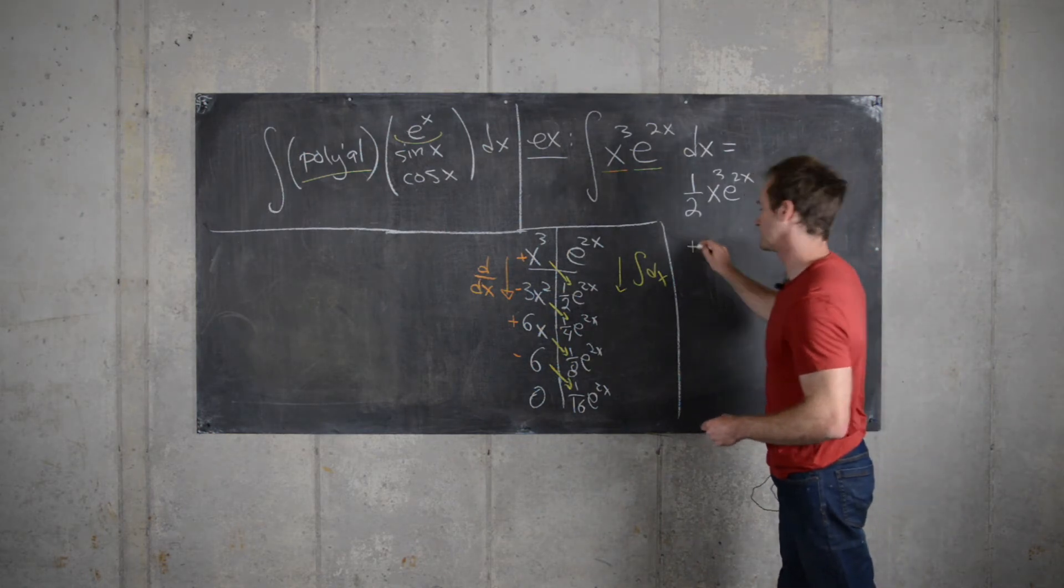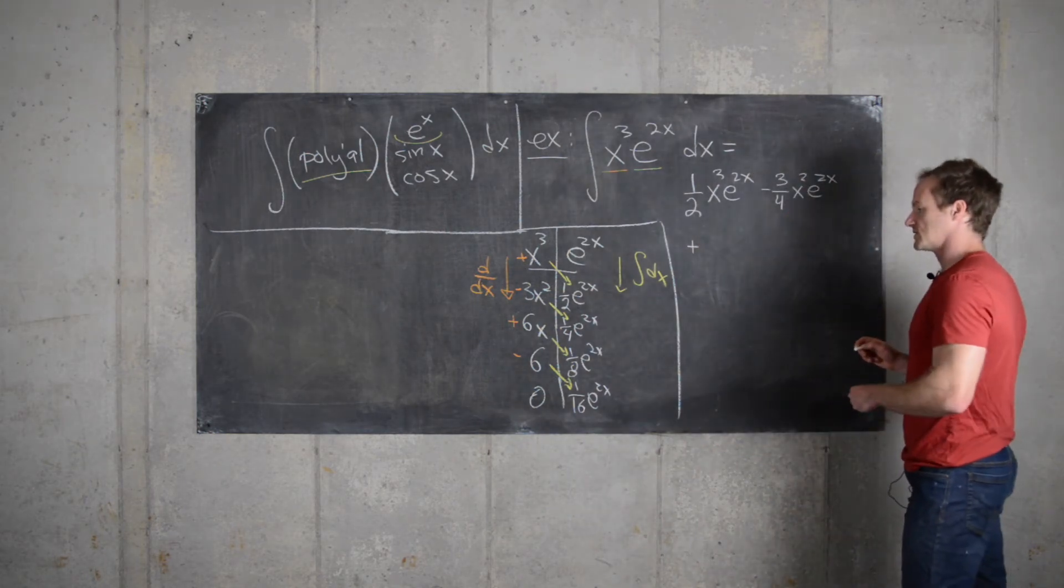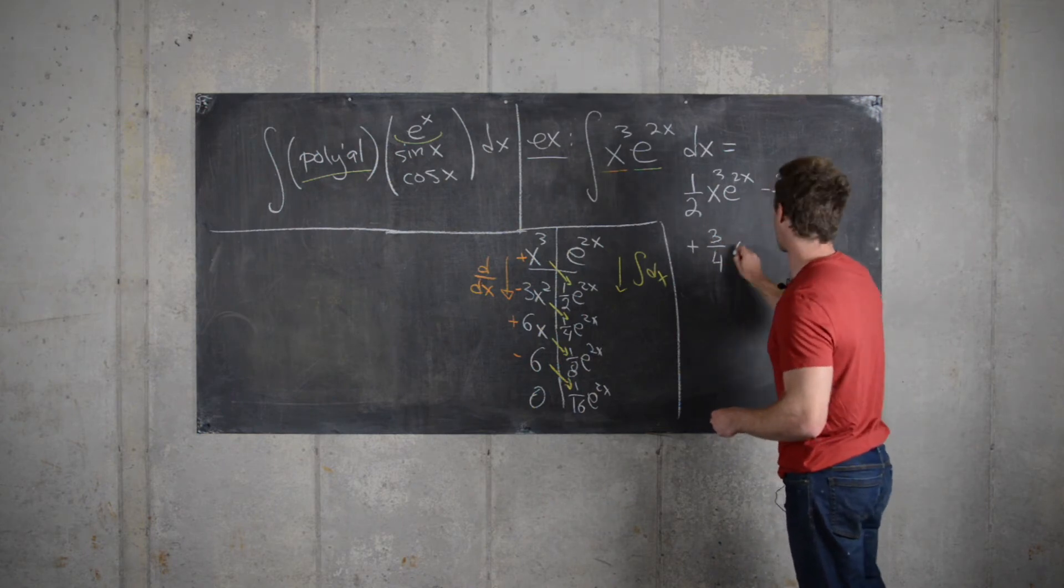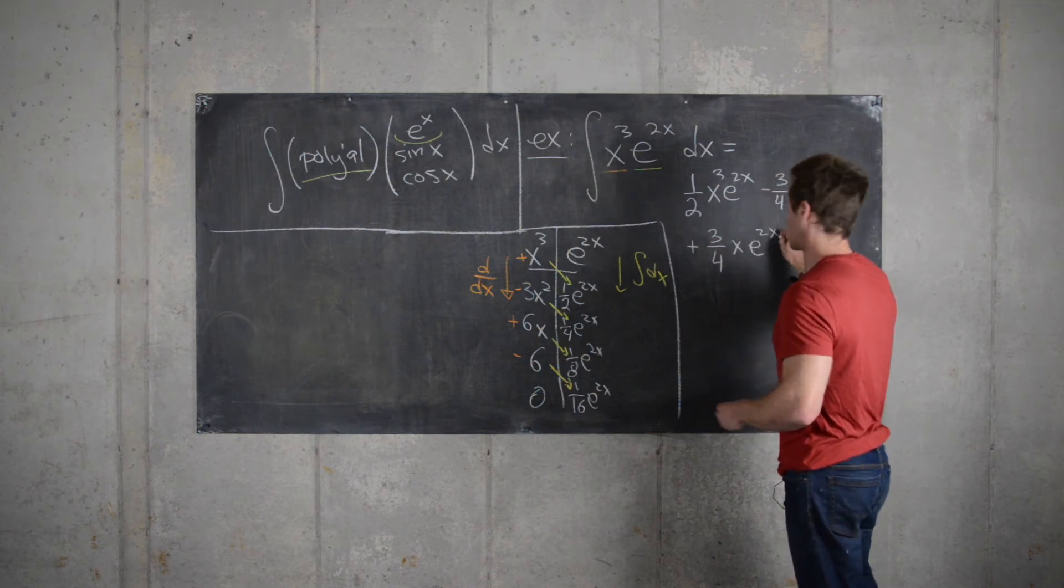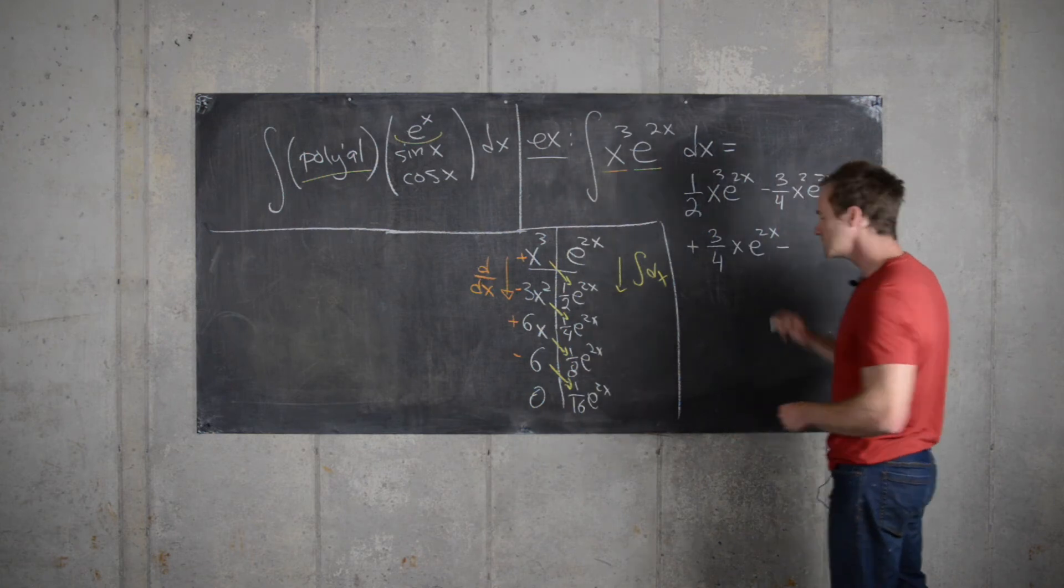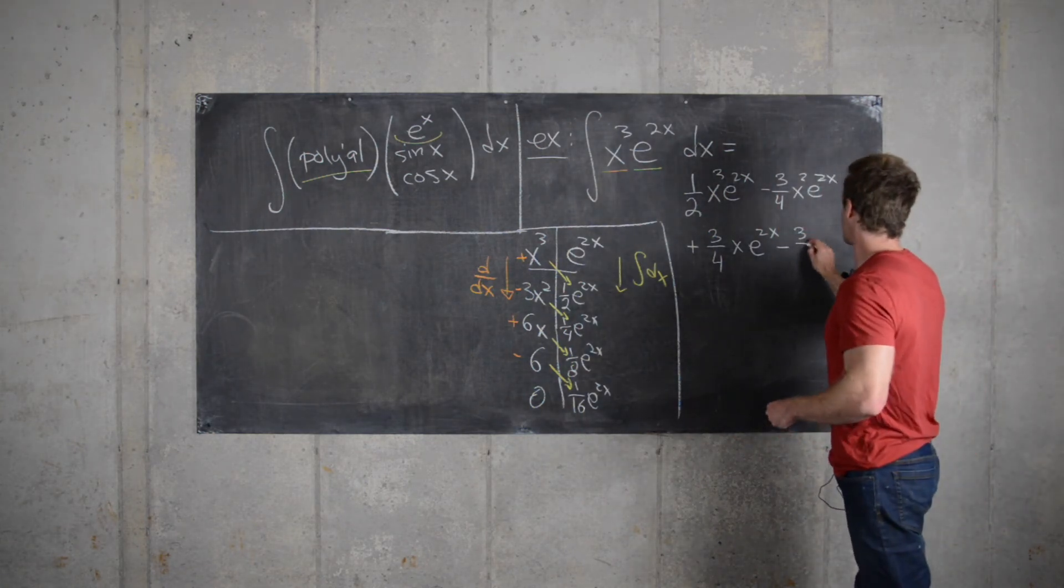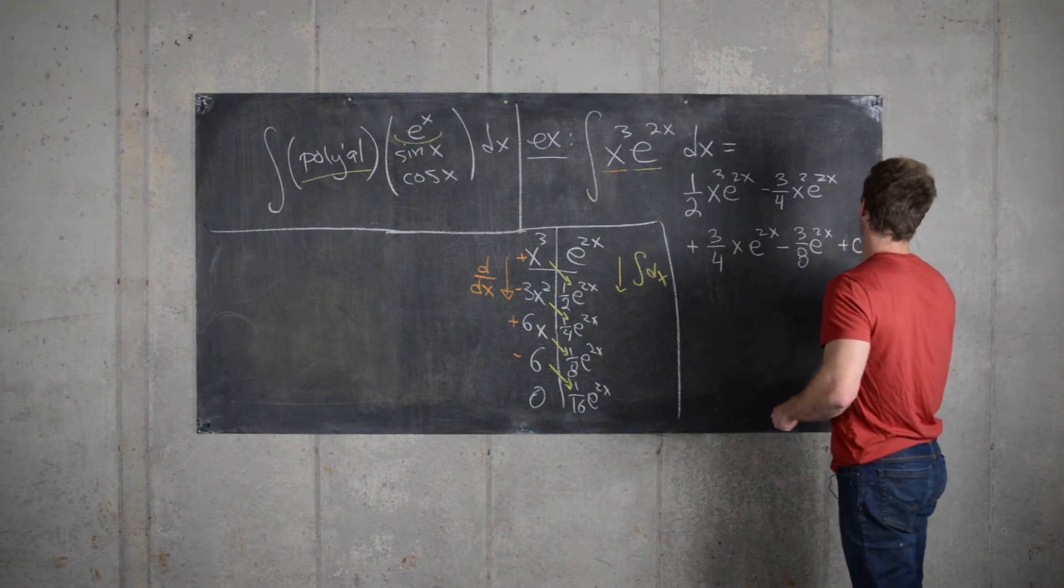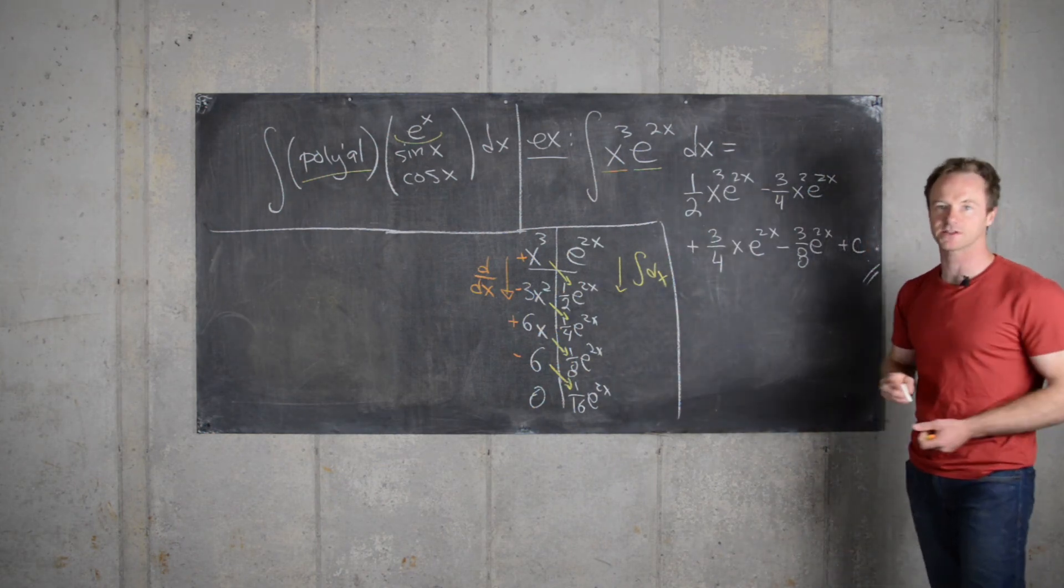Plus 6 over 8, that's the same thing as 3 over 4 again, so 3 over 4x e to the 2x, and then finally minus 6 over 16, that's 3 over 8 e to the 2x, and then we have our constant of integration and that's our final answer.